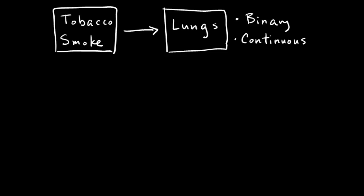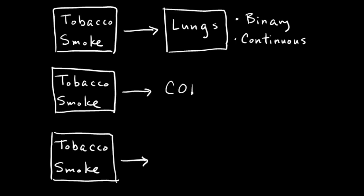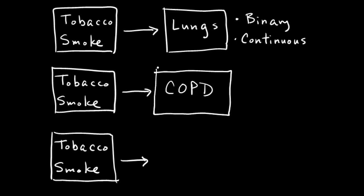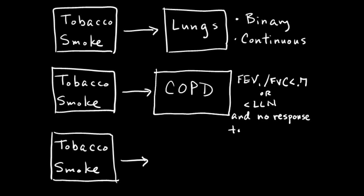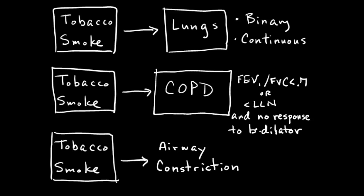Returning to my model plan — tobacco smoke as cause, effect on lungs — I said I could choose either a binary or continuous outcome variable. Now I have possibilities for both. On the binary side, I could use COPD (yes/no), defined by FEV1/FVC below 70% or below the lower limit of normal, and no response to a bronchodilator. Alternatively, I could use the continuous FEV1/FVC ratio itself, representing airway constriction.